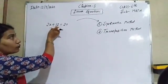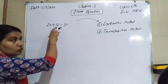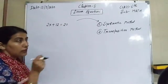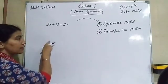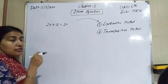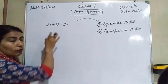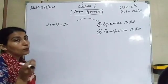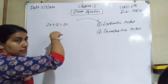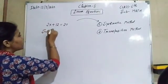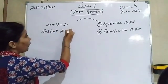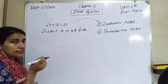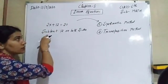The first step: look at the constant value on the left-hand side, which is positive 12. If there is a positive 12, you have to subtract 12 on both sides so you can remove it, because we need only x on the left-hand side. If the constant were negative 12, you would add 12 instead. So the first step is to subtract 12 on both sides.